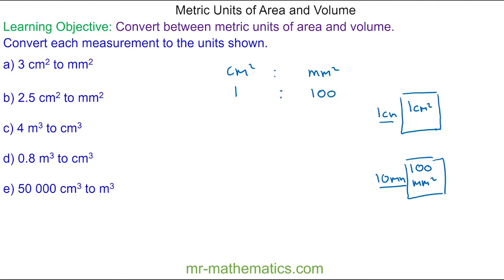We can use this to convert three centimetres squared into millimetres squared by multiplying both sides of the ratio by three. So we have three centimetres squared is 300 millimetres squared.